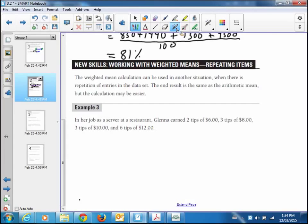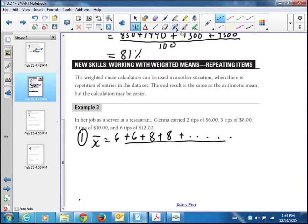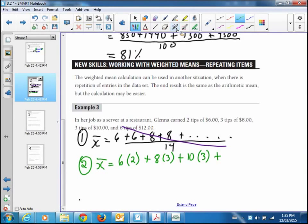You could calculate this one of two ways. Glenn earned two tips of six bucks, so you could say the mean is going to be 6 plus 6 plus three tips of 8, 8 plus 8 plus 8. You can see that's going to be a long process, and then divide by the total number of tips, which is 14 tips. That's going to be more work. I'd say don't do it that way. The shorter way is to use multiplication. If she earned six dollars in a tip twice, we could do it that way, six times two. Plus, she earned eight dollars three times. Plus, she earned ten bucks three times. Plus, twelve bucks six times. Divide that by the total number of tips. The total number of tips was the two tips, plus the three tips, plus the other three, so we're at eight. Fourteen tips with the six out of them.